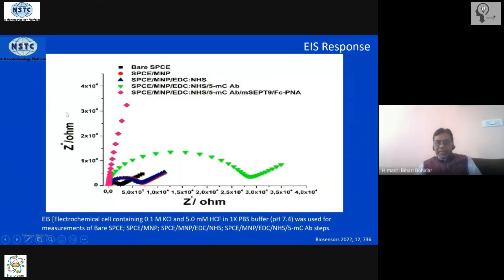This is the impedance measurement. Imaginary part of the impedance and the real part of the impedance. This is the bare electrode, the black one. You see very small transfer resistance here.